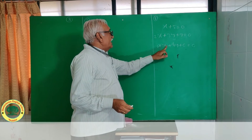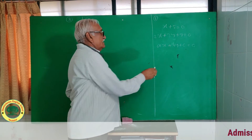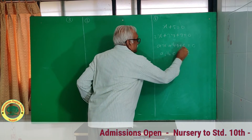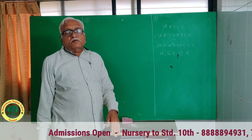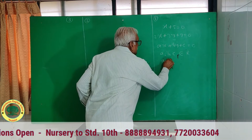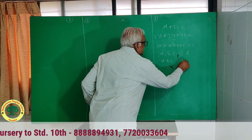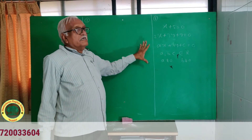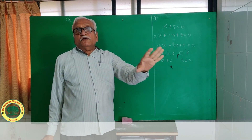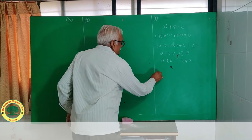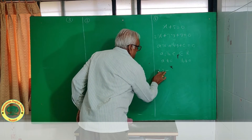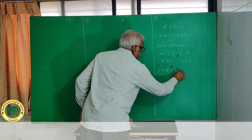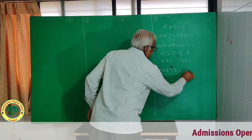Ax plus By plus C equal to 0 is the general form of a linear equation in 2 variables, where a, b, c are real numbers — that is, a, b, c belong to R. Also, a is not equal to 0 and b is not equal to 0. This is called the general form of a linear equation in 2 variables.